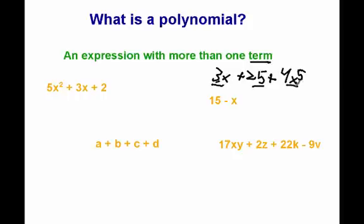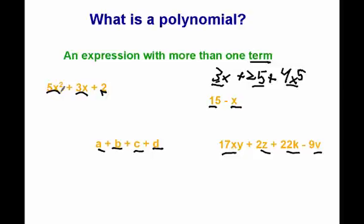3x, 25, and 4x to the 5th — those are all terms. Looking at these four examples in yellow, each are polynomials. This small one only has two terms: 15 and x. Another has four terms, one has four terms, and another has three terms. An example that is not a polynomial would be 2x to the 9th power — that is just one term, and if we have it by itself, it is called a monomial, which just means it has one term. So a polynomial is just an expression that has more than one term.